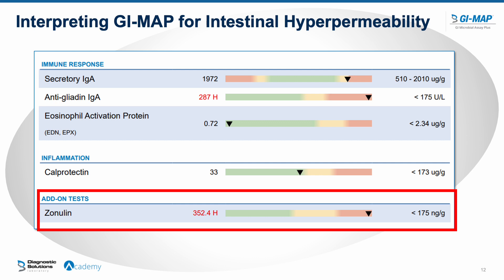On the GI map, you'll find zonulin on page 4 — it's an optional add-on test. In this example, zonulin is very elevated above the reference range of 175 nanograms per gram, which is already a fairly high reference range. This person would need work around zonulin and addressing factors causing chronic elevation. This patient also has an elevated anti-gliadin IgA, indicating non-celiac gluten sensitivity — very commonly seen together with high zonulin.